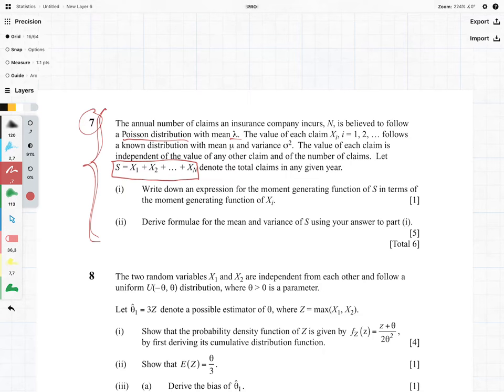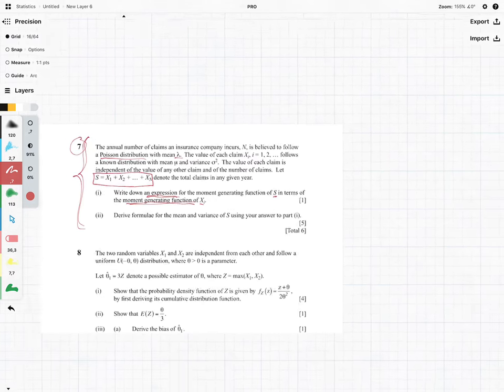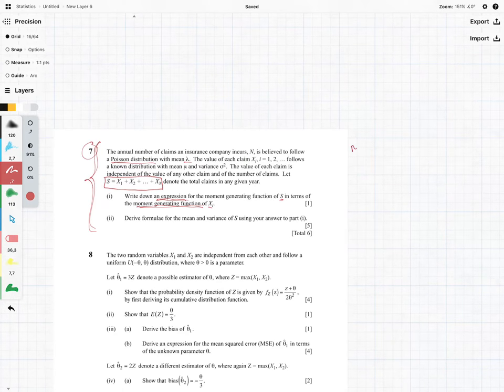We just need to write down an expression for the moment generating function of S in terms of the moment generating function of xi. So how do we do this? Well, I think one very important thing to realize is the formula for Ms(t).